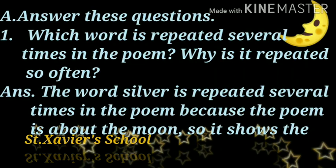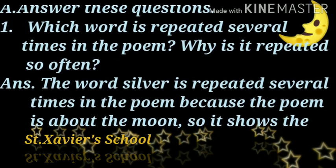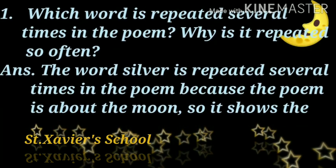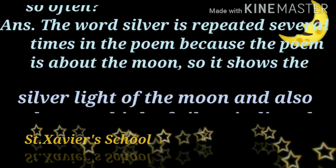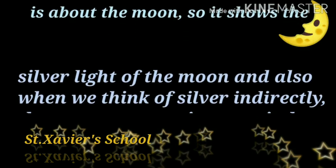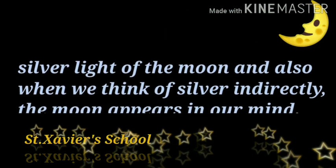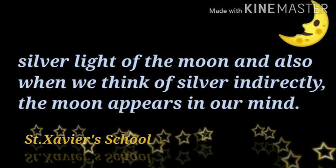The word Silver is repeated several times in the poem because the poem is about the moon. It shows the silver light of the moon, and also when we think of silver, indirectly the moon appears in our mind.